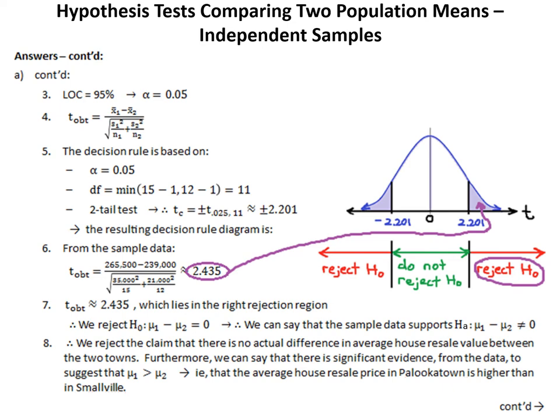Step 7: t obtained of 2.435 falls into the right rejection region, so we reject H0 that mu1 minus mu2 equals zero. The sample data supports the alternative hypothesis HA that mu1 minus mu2 is not equal to zero. Step 8: therefore, we reject the claim that there is no actual difference in average house resale value between the two towns. Furthermore, there is significant evidence from the data to suggest that mu1 is greater than mu2 — that the average house resale price in Palookatown is higher than in Smallville.